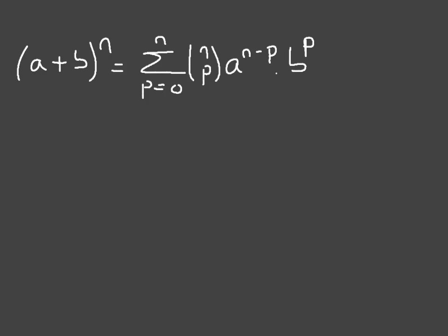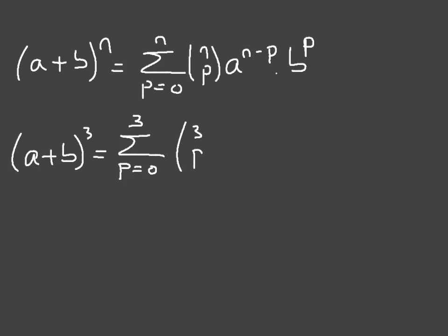Let's see how this actually works with a quick example. Let's say we have to find (a + b) to the power of 3. Looking at what we just wrote, all I've done is replace n by 3. So I can use the binomial expansion formula and rewrite it, simply replacing n by 3. That gives us the sum from p equals 0 up to p equals 3 of the binomial coefficient (3, p) times a to the power of 3 minus p times b to the power of p.